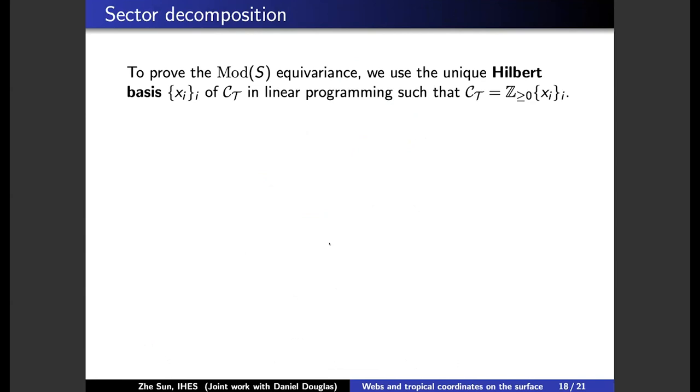So, to prove the mapping class group equivariance, we're using, actually, the unique Hilbert basis of the lattice in linear programming, such that the lattice is spanned by any species with no negative coefficients.